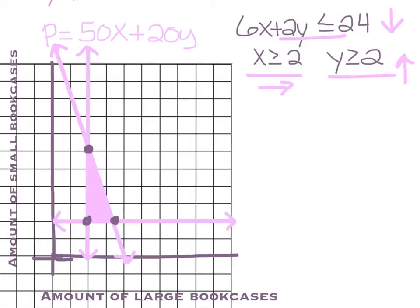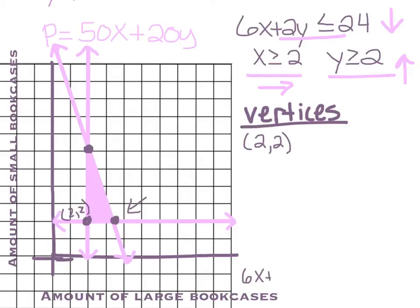So the first one's pretty easy because we know it's 2, 2. But this one over here isn't as easy. I'm going to label these on the graph, by the way. 2, 2, right there. This one's somewhere in between 2 and 3. So the way to figure it out is to take the equation of the line that has the slope, the first one, and plug in y equals 2. So we want 6x plus 2 times 2 is less than or equal to 24. If I subtract 4 from 24, I have 6x is less than or equal to 20. 20 divided by 6 is 10 thirds, which is 3 and a third. So we have a point at 3 and one third, 2. That's that point right there.